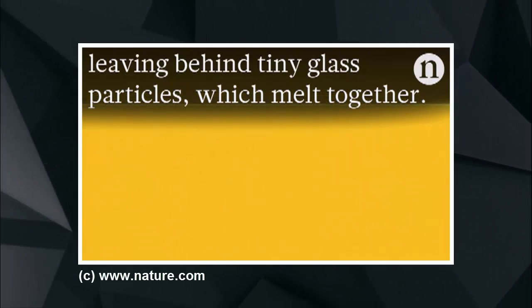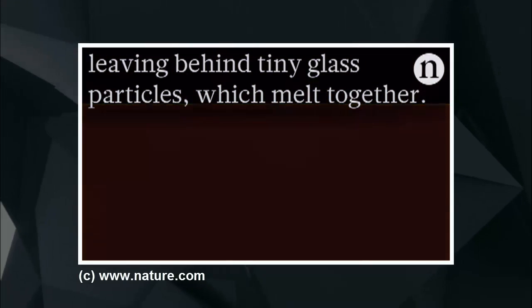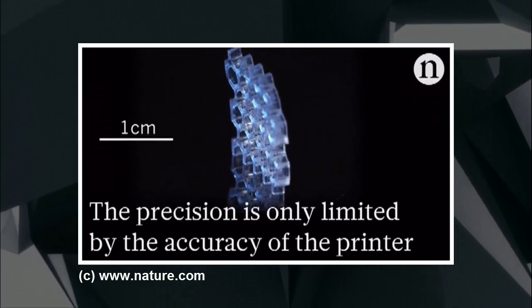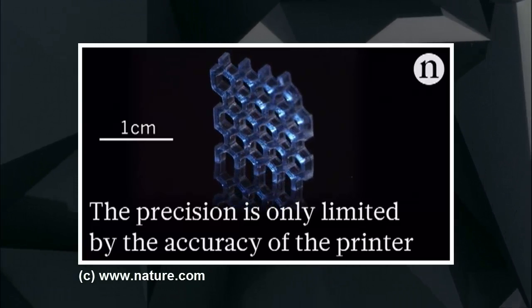These are then heat treated to produce optical quality fused silica glass structures. These structures are smooth and transparent with features as small as a few tens of micrometers.